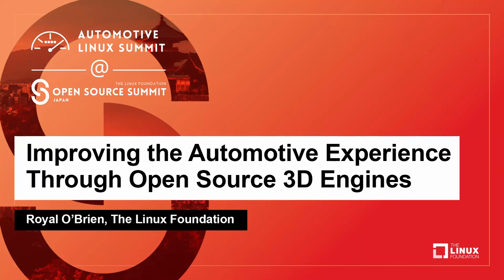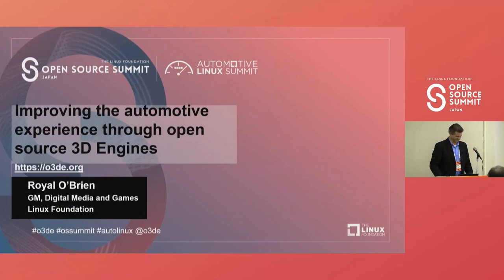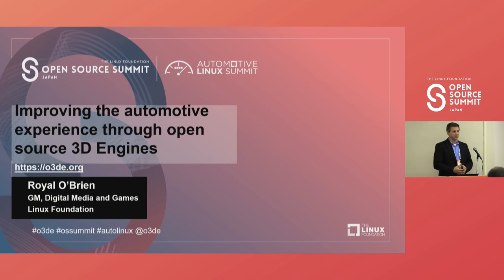Welcome to today's talk. My name is Royal O'Brien — yes, Royal is my actual name. It's not a usual name. We're going to talk about 3D engines and open source. I'm the general manager of digital media and games at the Linux Foundation, and I also serve as the executive director on the Open3D Foundation.